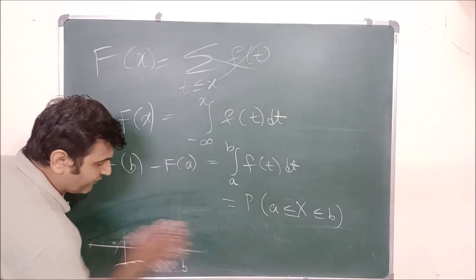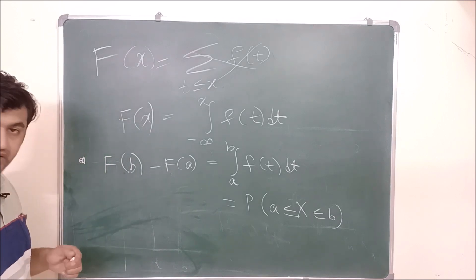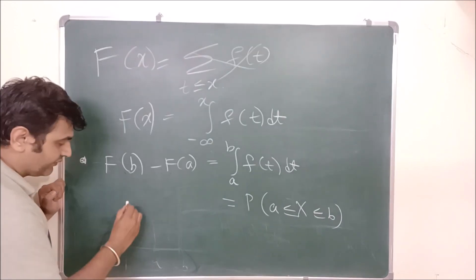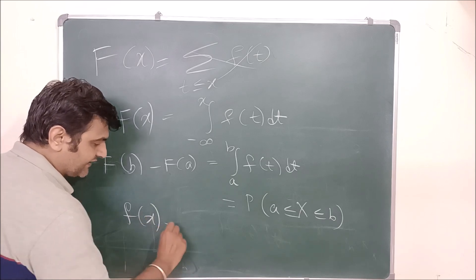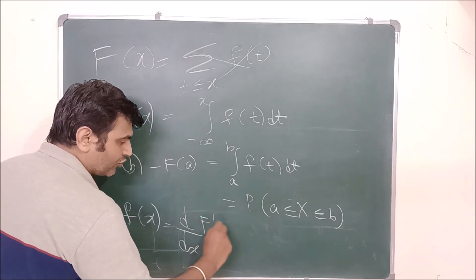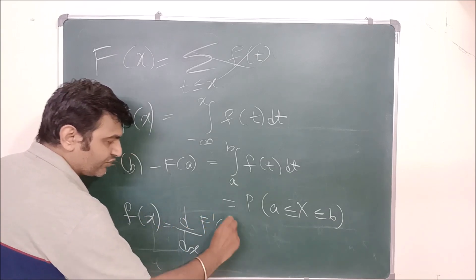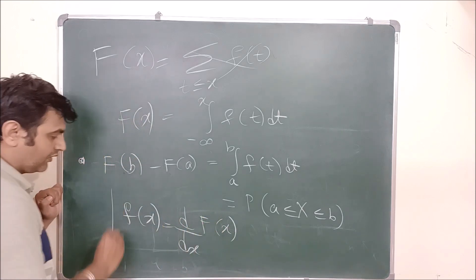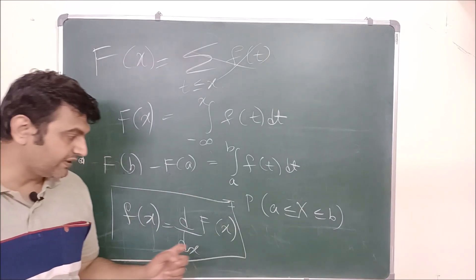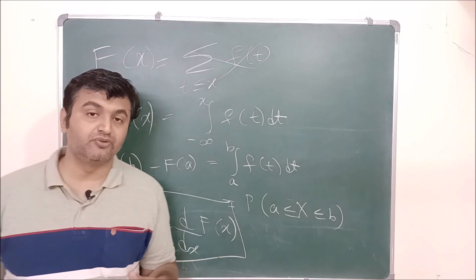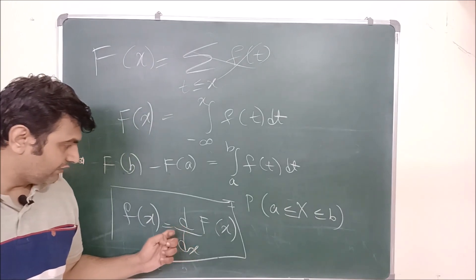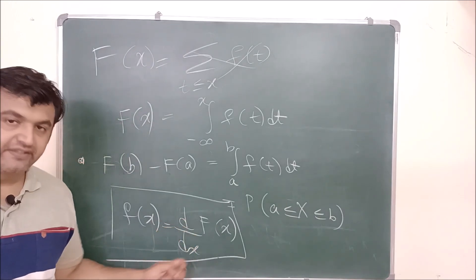And from here, if you recall the fundamental theorem of calculus, your F(x) is nothing but the anti-derivative — that means F(x) is the derivative of the cumulative distribution function. So your probability density function is nothing but the derivative of the cumulative distribution function, wherever it is differentiable.